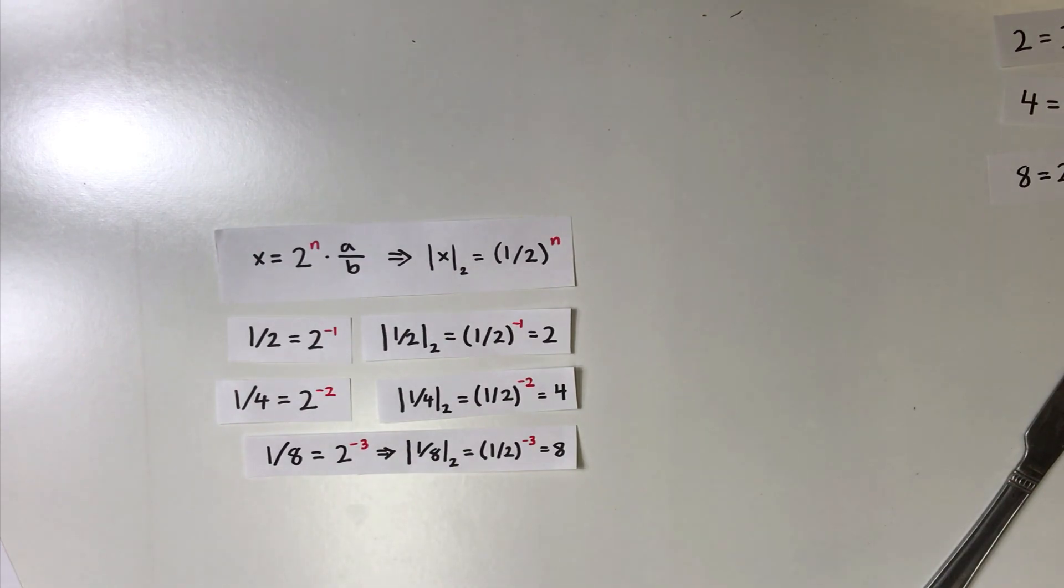It is important to note that any odd number or any rational number that contains only odd numbers has 2-adic valuation of 1.